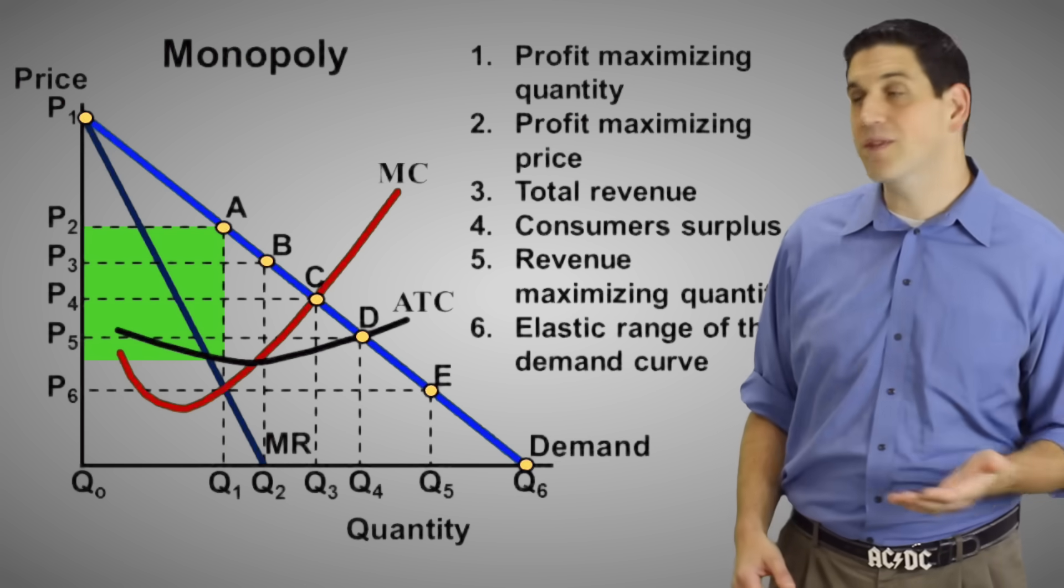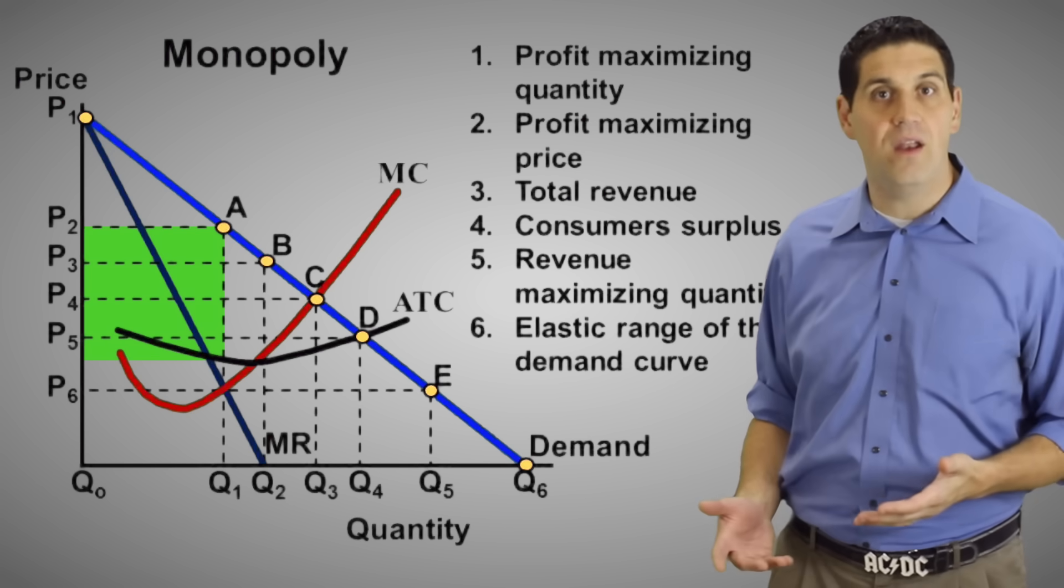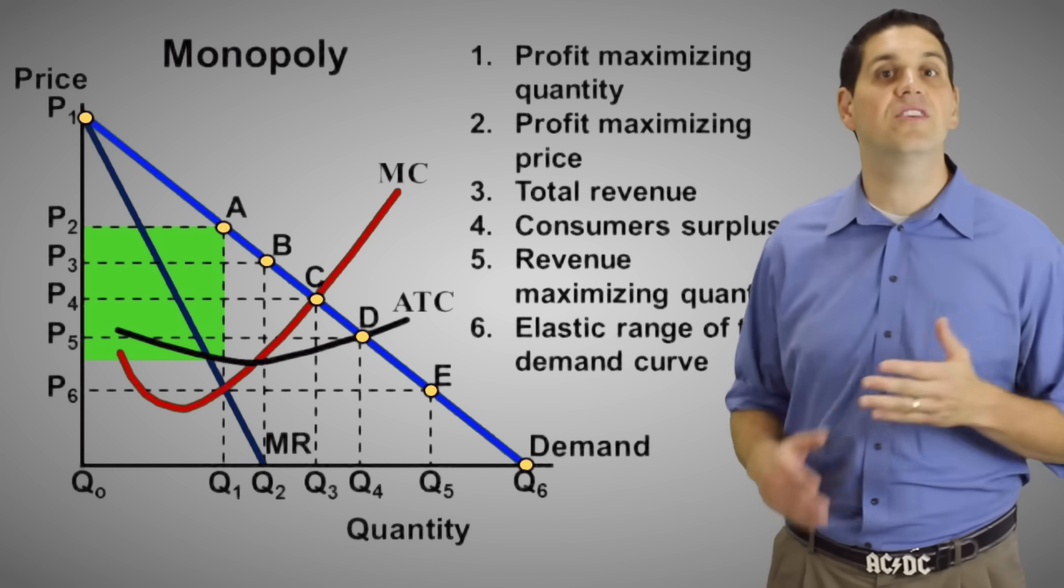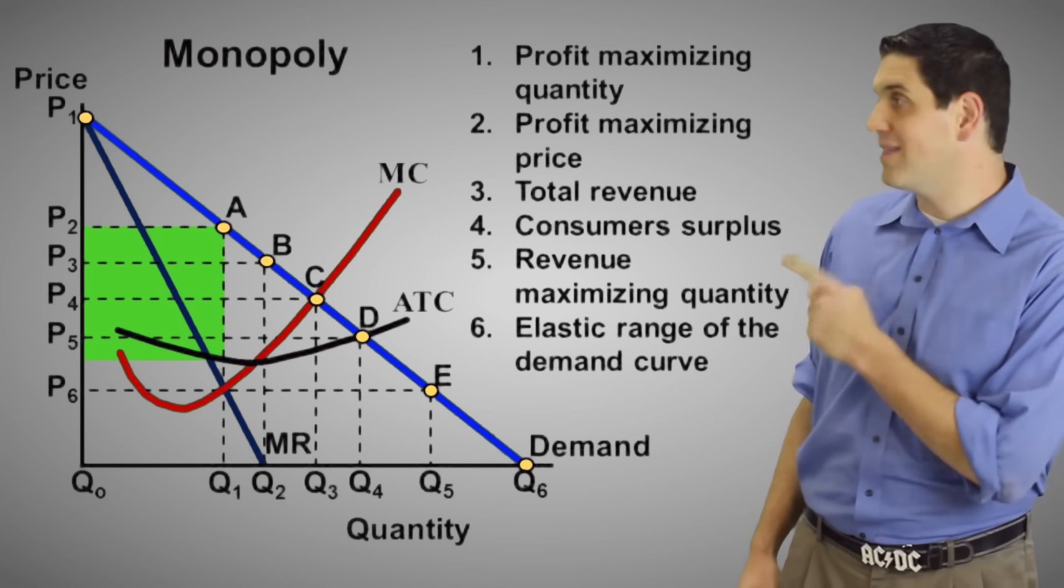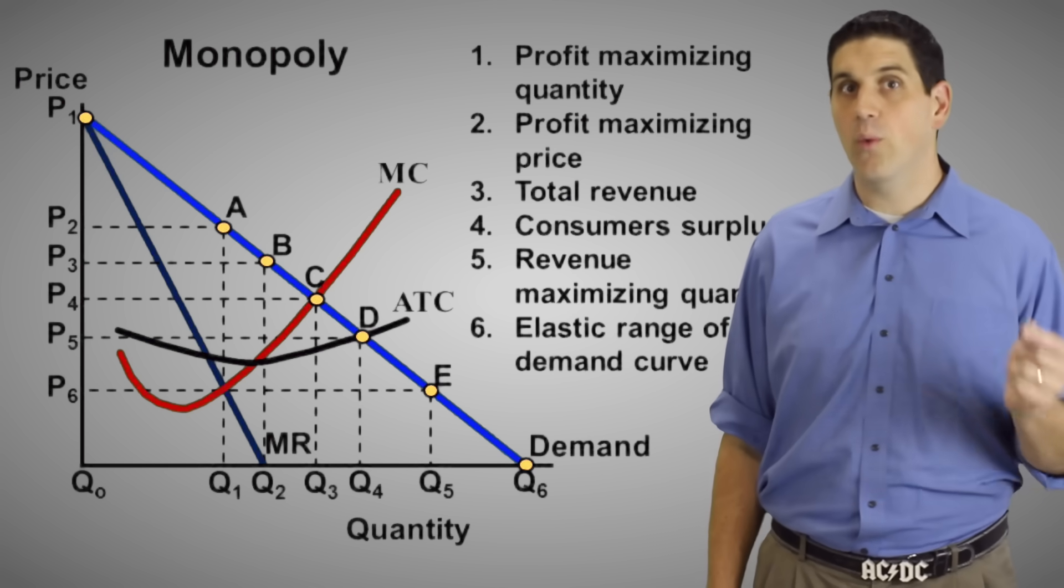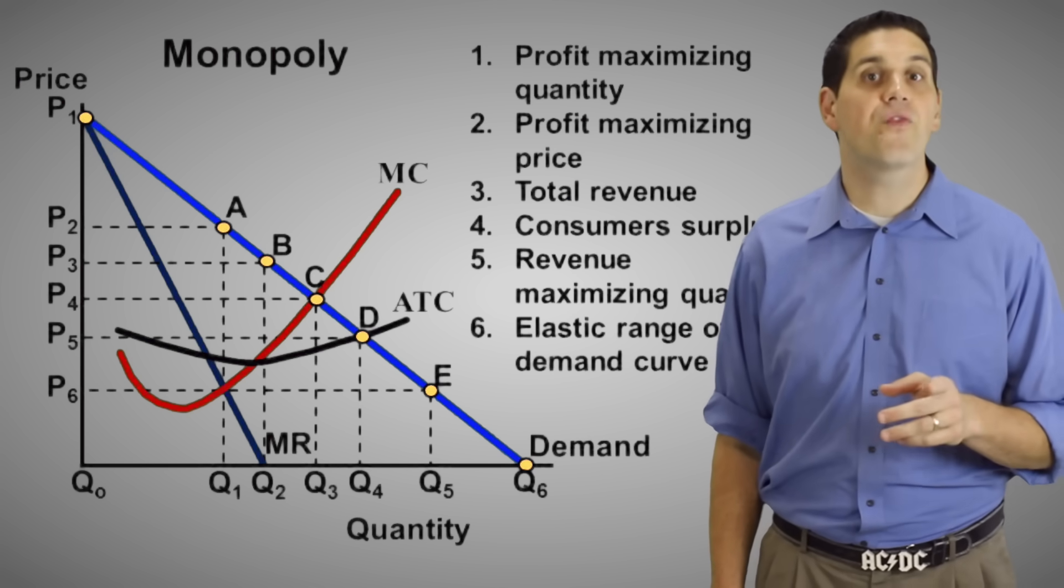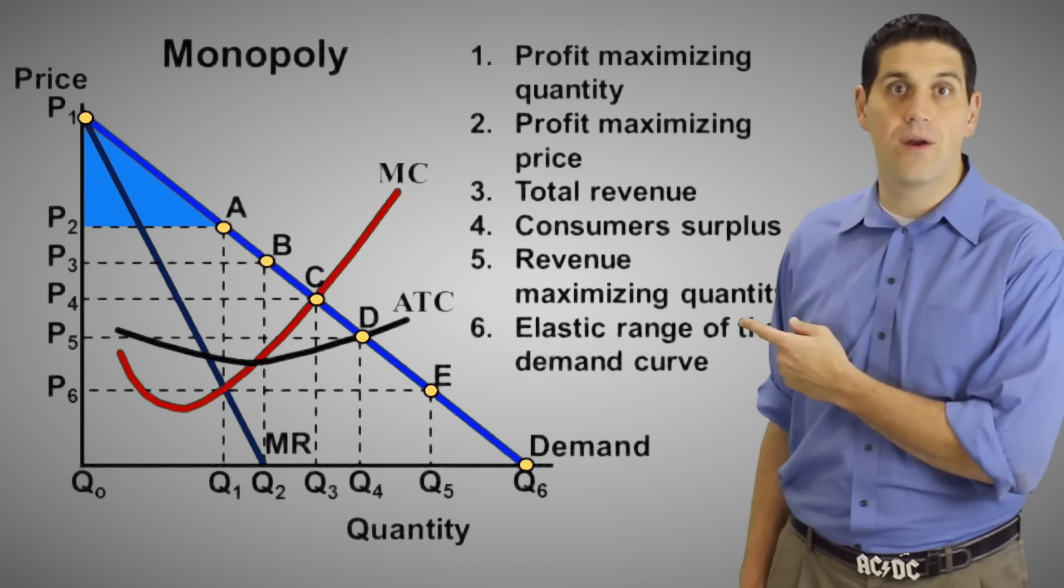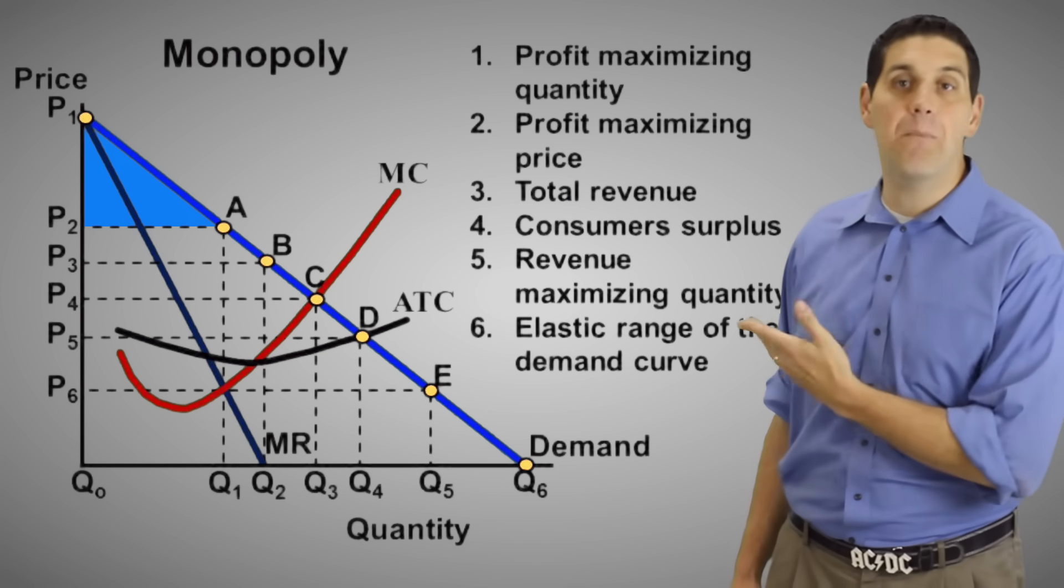So if this monopoly is making profit, are other firms going to enter in the long run and take away that profit? No, because there's high barriers. Remember, this is a monopoly. High barriers means they're going to make that profit in the long run. You remember that consumer surplus is the difference between what you're willing to pay and what you did pay for something. So for monopoly, consumer surplus is right there. It's the triangle P1 A P2.